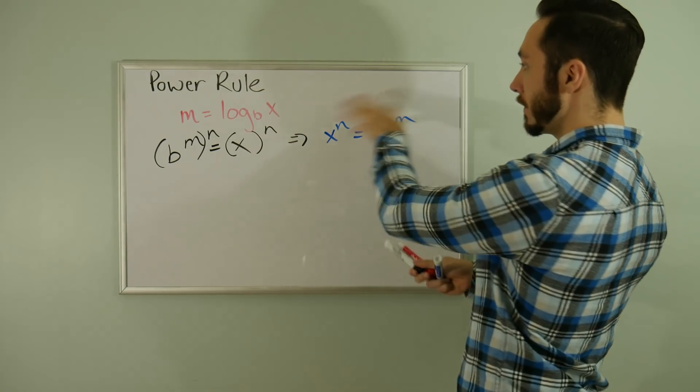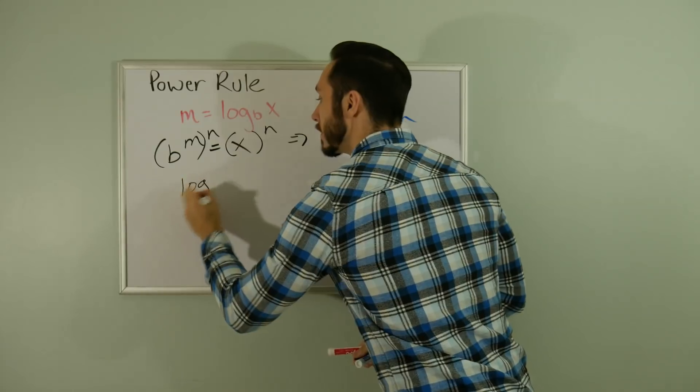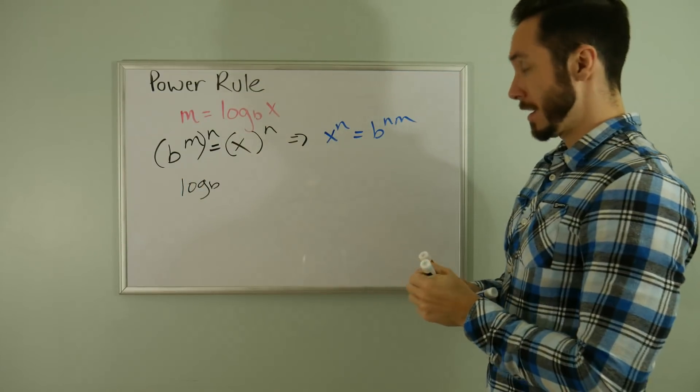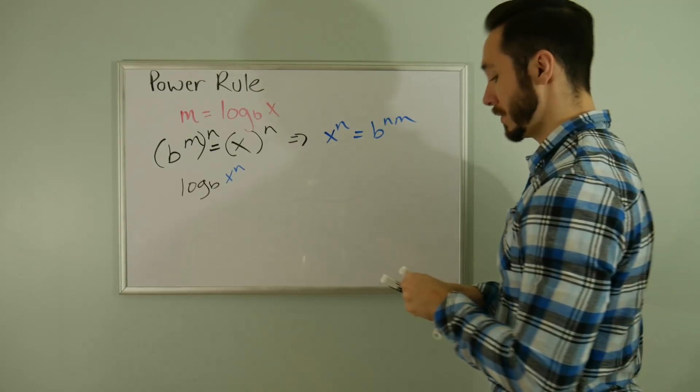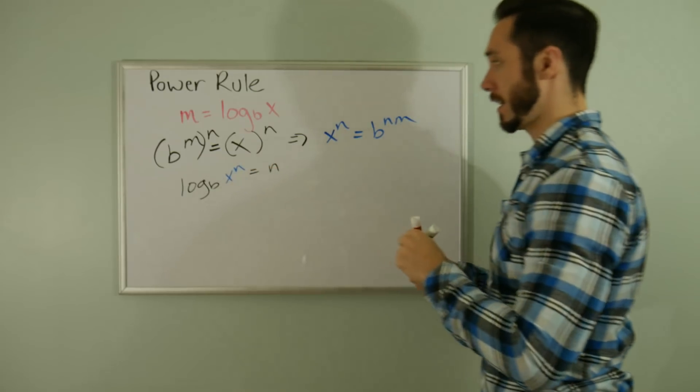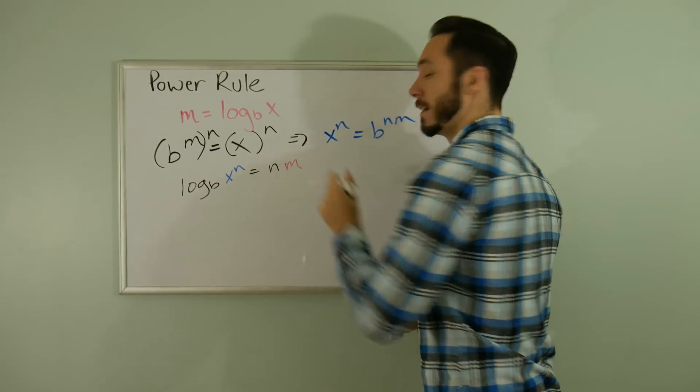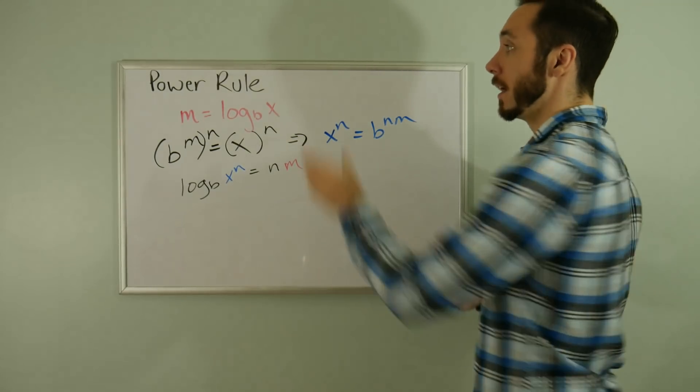Now I can use the definition of a log to rewrite this. I can say that log base B of X to the power of N is equal to the exponent, which equals NM. I'm being very intentional with my color coding here because I know what M is equal to.